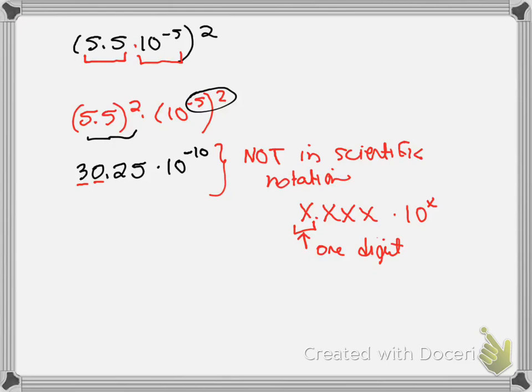So, just like I've done in the previous videos, we need to convert 30.25 to scientific notation. Okay, so we are starting with our decimal place right here. We need it to end, we need it to land right there in front of the 3 in order to satisfy this requirement that there is only a single digit in front of our decimal point.